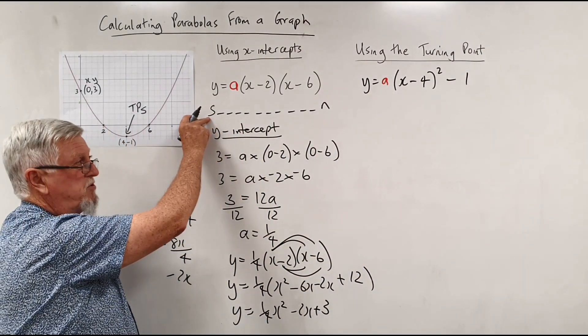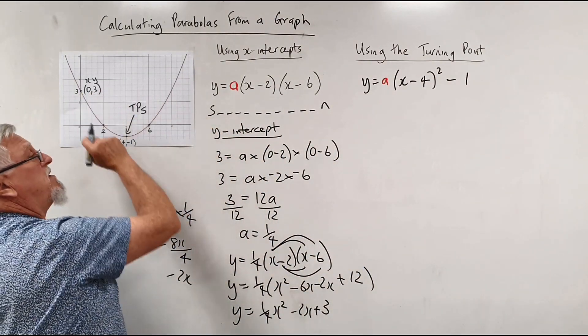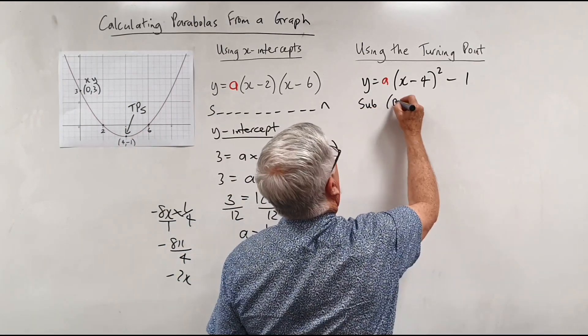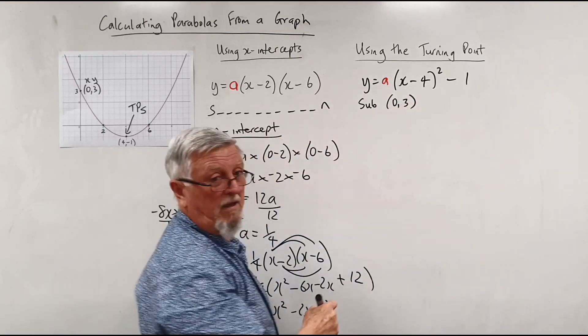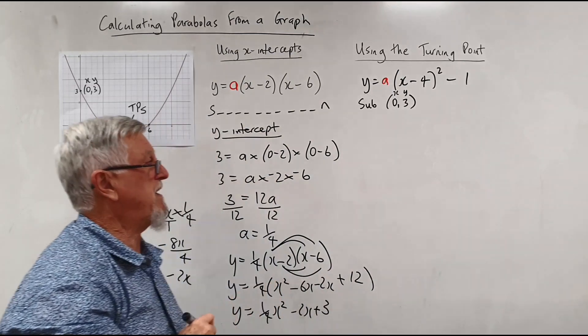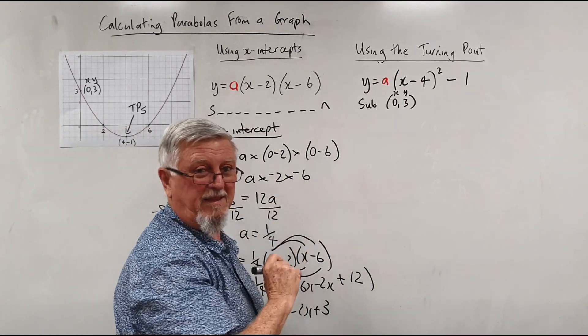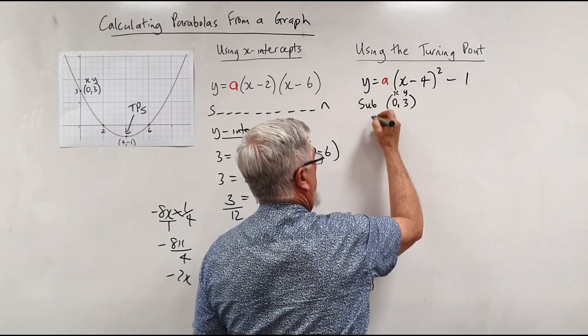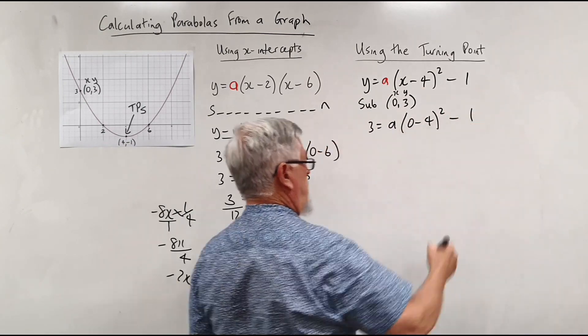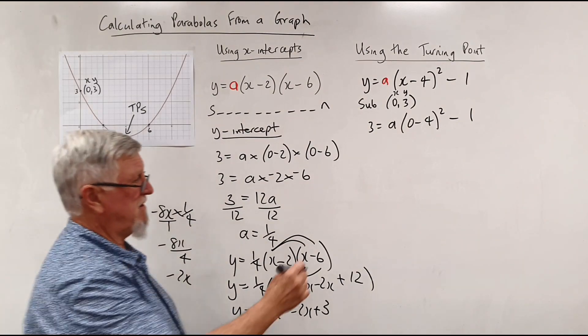And what are we going to substitute? Well, we do know the y-intercept. So I could just simply say, old school, I could say substitute (0, 3). Sorry guys, it's become a bit long. I didn't realize I'd take this long to explain it. So the 3 goes there, and then you've got a outside of 0 take 4 squared, minus 1.